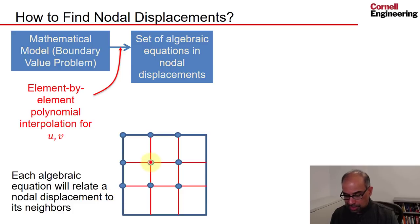And each algebraic equation will relate a nodal displacement to its neighbors. If I write the algebraic equation corresponding to equilibrium in the x direction at this node, it will involve these displacement values, not the ones that are away from those values. That's because if I change the value here, it will affect only the interpolations in the elements attached to it.